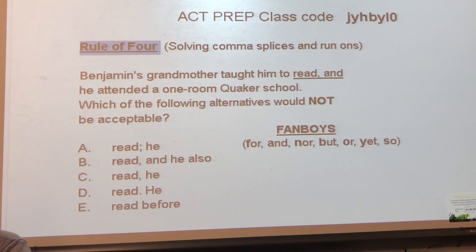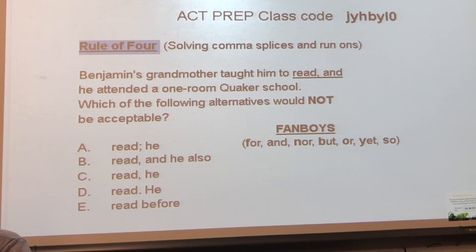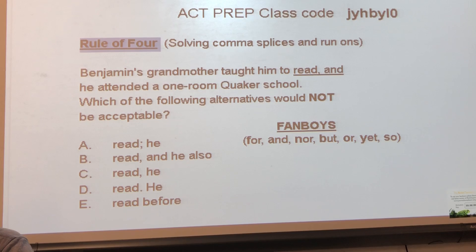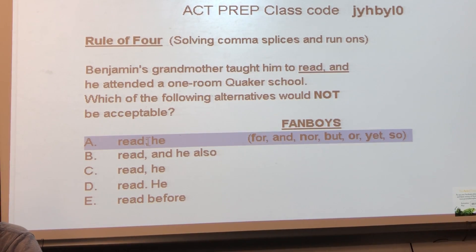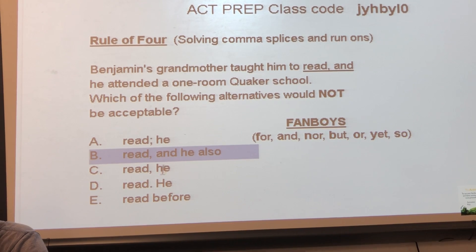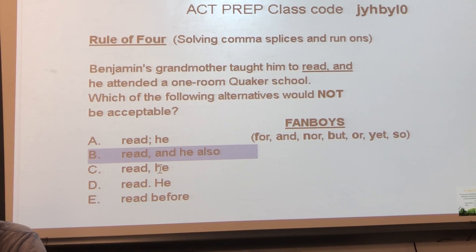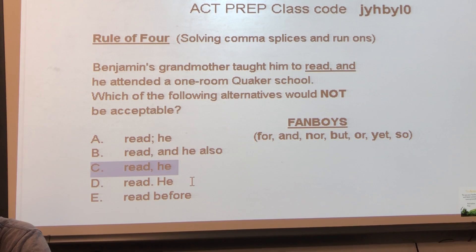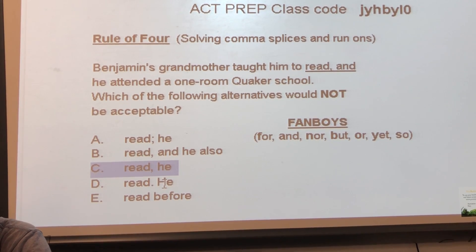Which of the following alternatives would not be acceptable? A joins the two clauses with a semicolon, which is acceptable since semicolons can replace a comma and fanboy conjunction. B joins the two clauses using a comma and a fanboy conjunction, which is perfectly fine. C joins the two clauses with a comma only, which is a comma splice and is not accepted by the ACT.